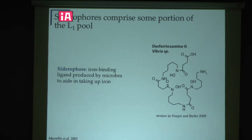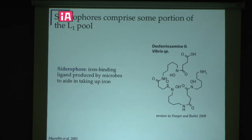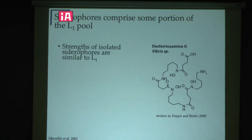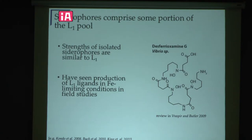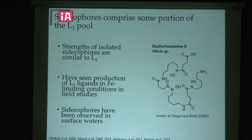We want to know what these L1 ligands are. We've thought for a long time that perhaps these L1 ligands are siderophores — iron-binding ligands produced by microbes to help in the uptake of iron. We know about them from the terrestrial world because soil bacteria produce these compounds to remobilize particulate iron in soil. The strength of siderophores isolated from marine cultures have similar strengths as L1 ligands in seawater. We've seen production of L1 ligands in experimental work especially under iron-limiting conditions, and there have been a few studies that have measured siderophores in some surface water samples.